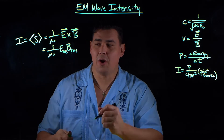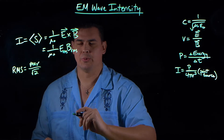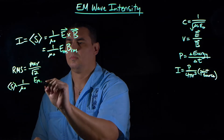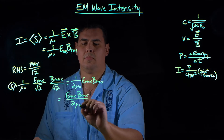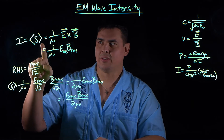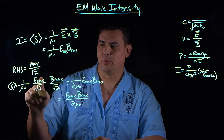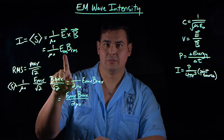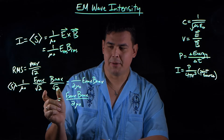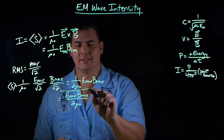Let's simplify further. The RMS value equals the maximum (amplitude) value divided by √2. Plugging that in for both E and B: we get 1/μ₀ times (E_max/√2) times (B_max/√2). The two square roots multiply together to give 2 in the denominator, so the intensity simplifies to E_max · B_max divided by 2μ₀.